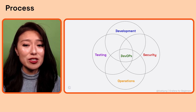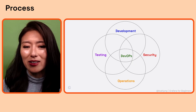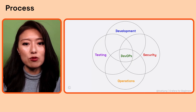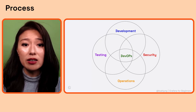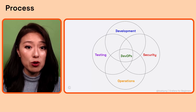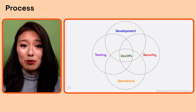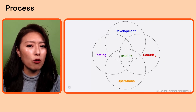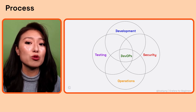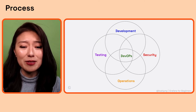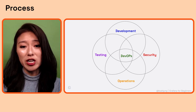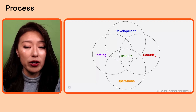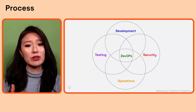During this time, the operations team could share what could be done during the development process to ensure successful deployment, and understand the vision of the development team so they can design an infrastructure that properly supports the code. The security team could share their knowledge on how to write secure code, add safeguards, eliminate vulnerabilities from the get-go, and address security concerns throughout the software delivery process. The testing team could advise each team to incorporate testing from start to finish so they could catch and fix problems early.